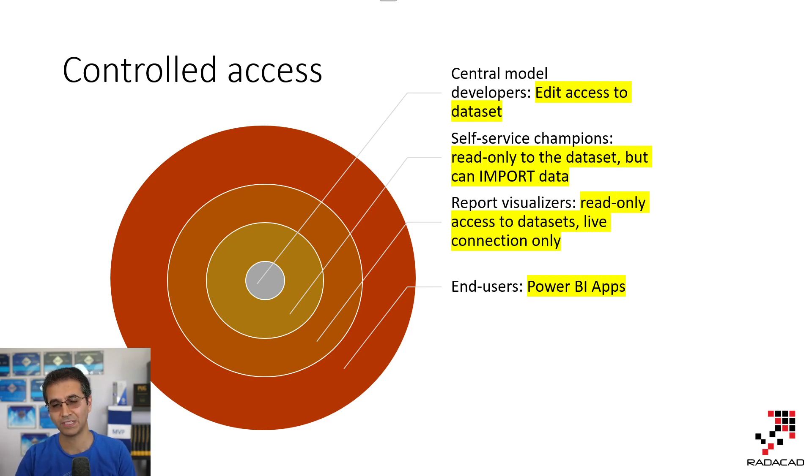Your self-service champions, they also have read-only access to the data set, but the difference is that they can import data from other places, which can be a combination of importing data from existing model and importing from other places, or the feature that is coming later, ability to have multiple live connections at the same time. But they would be able to change the model, not the existing model, but build their own model and their own reporting.